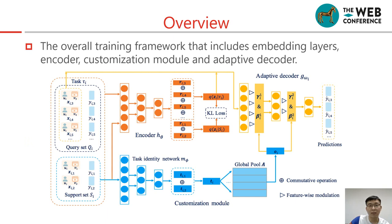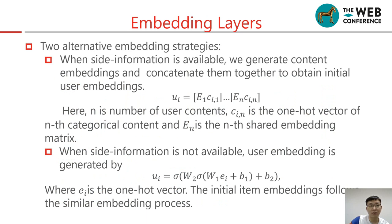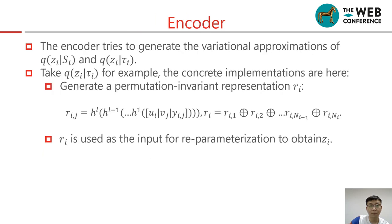This is the overall training framework that includes embedding layer, encoder, customization module, and adaptive decoder. We have two alternative embedding strategies. When side information is available, we generate content embeddings and concatenate them together to obtain initial user embeddings. When such information is not available, user embedding is generated by here. The encoder tries to generate the variational approximation of q(zi|si) and q(zi|τi). Take q(zi|τi) for example, the concrete implementations are here. Generate a permutation invariant representation ri and then ri is used as input for parameterization to obtain zi.